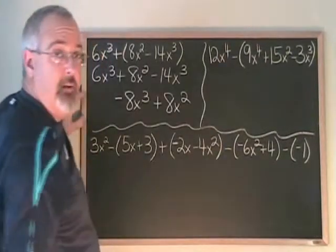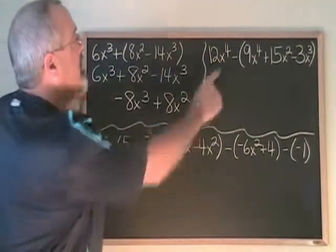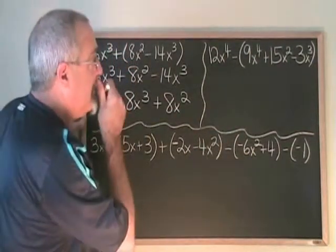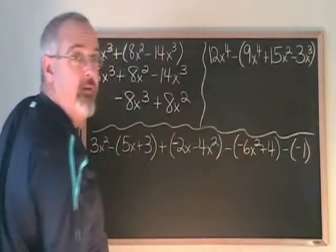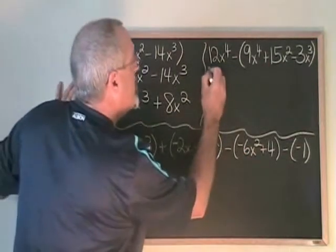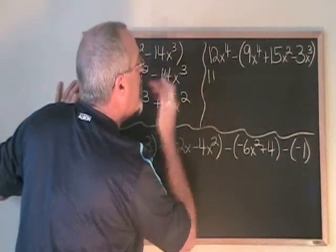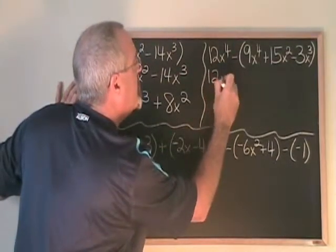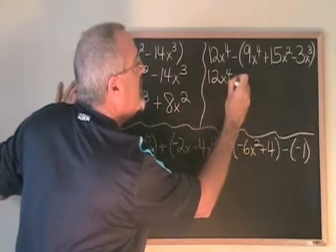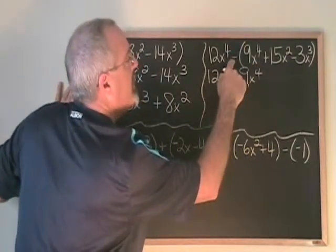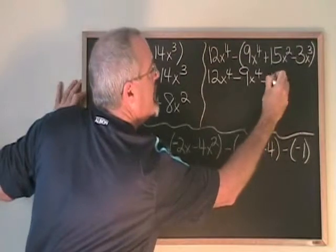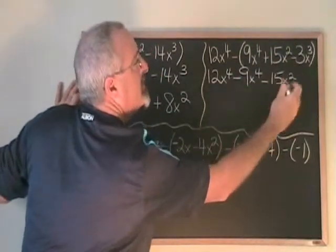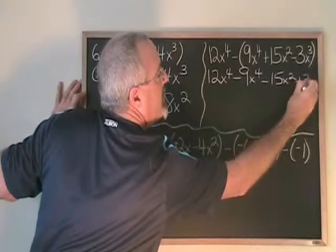But this one has a minus sign before it. What will happen is the minus sign affects the entire bracket, not just the first term. So when we remove the bracket, we have to fix the signs for everything on the inside. We have 12x⁴ minus 9x⁴, minus plus means minus 15x². And minus minus means plus 3x³.